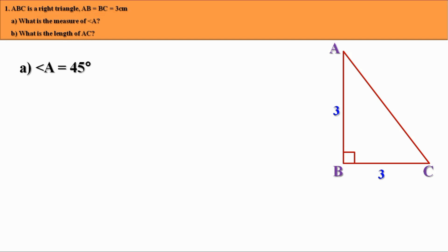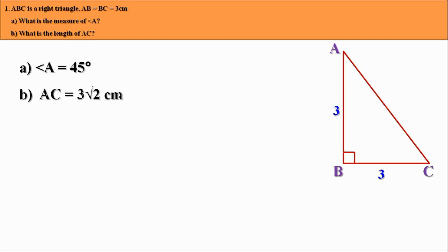Now, we have to find the length of AC. Since it is an isosceles right angle triangle, the ratio of the sides is 1 to 1 to root 2. The two sides are 3. Therefore, the third side is 3 root 2. That is, AC equal to 3 root 2 cm.